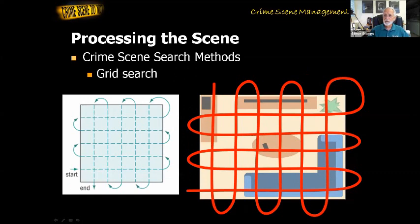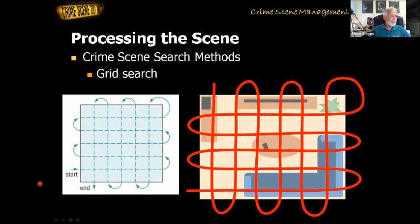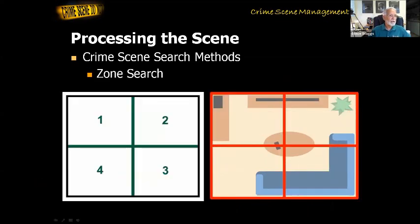A second way is the grid search. A grid search is a bit like a lane search, but you change direction and double back — you go across and back and across and back, and then do it in the other direction as well. That way you're covering every area twice, which helps you be more thorough. It takes twice as long, but it gives you a much more thorough search of the area.